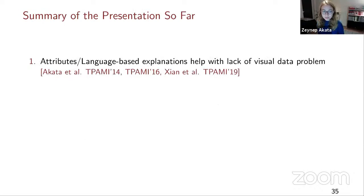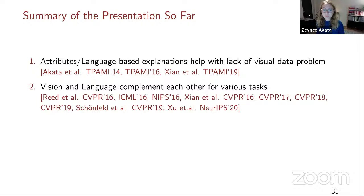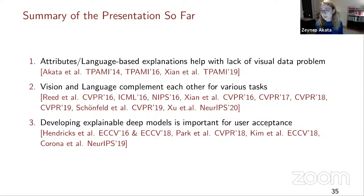As a summary, I talked about attribute and language-based explanations that help with the lack of visual data problem in zero-shot and few-shot learning. I talked about how vision and language complement each other for different tasks, how we use natural language to generate images of unseen concepts or image features to help classification, and how we develop explainable deep models and why they are important for user acceptance.